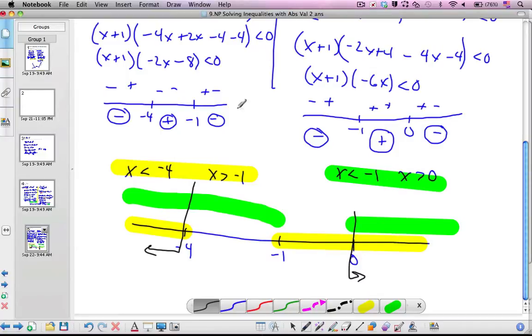So my final answer is that x is less than negative 4. And x is bigger than 0. So that analysis at the end is a little bit tricky to make sure you follow.